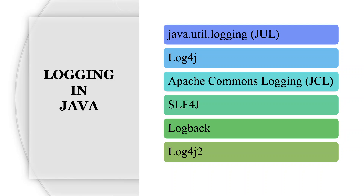What are the different APIs and frameworks you can use for logging? We have Java Util Logging, which is a package within Java also called JUL. We also have Log4j, Apache Commons Logging also called JCL, SLF4J, Logback, and Log4j2.